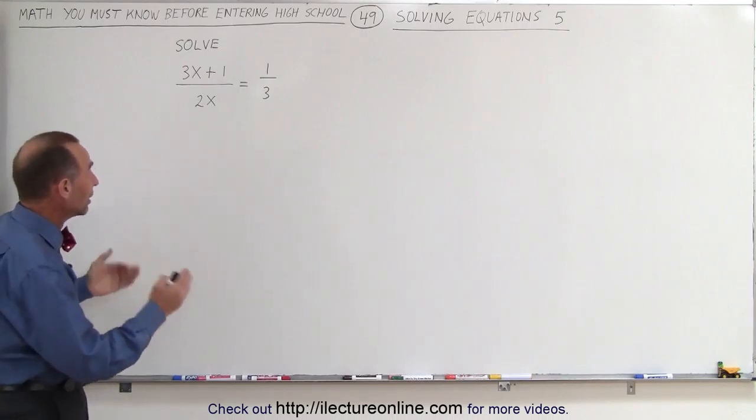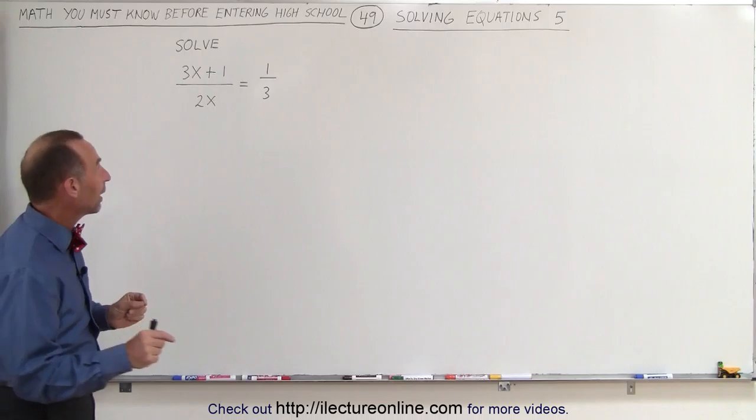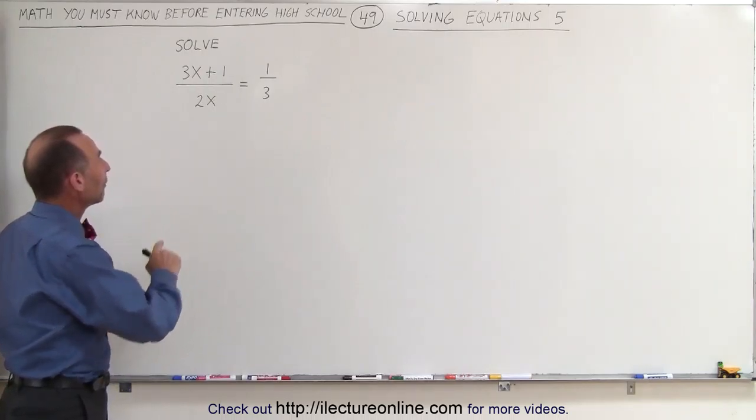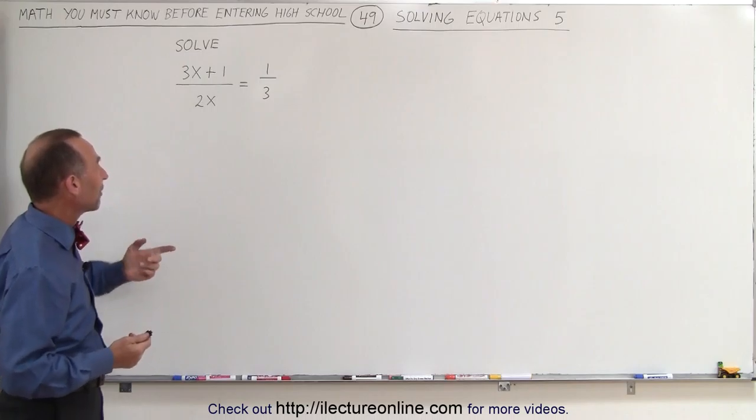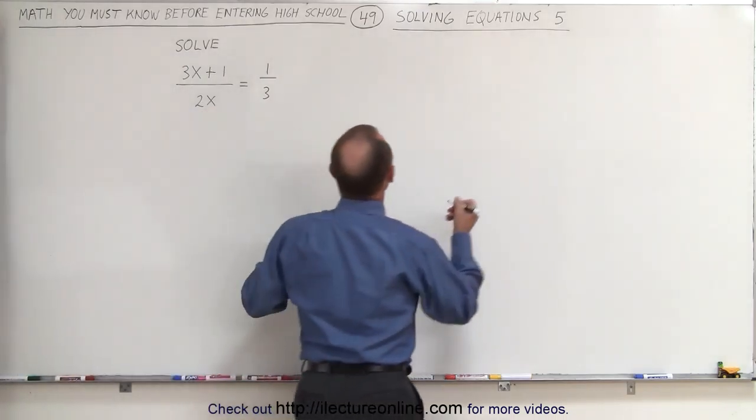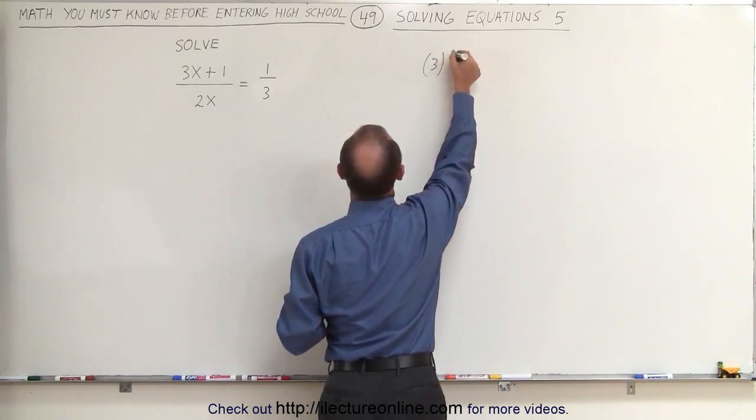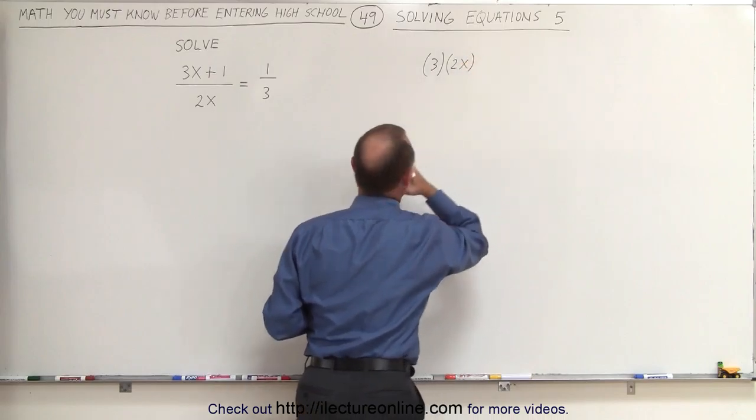Notice that there's two fractions, one on each side, and we want to get rid of the fractions. What we can do here is multiply both sides of the equation by the lowest common factor of both denominators. The lowest common factor would be the product of 2x and 3. So in other words, what we're going to do is multiply both sides of the equation by 3 times 2x.